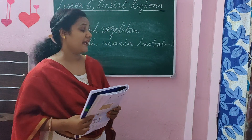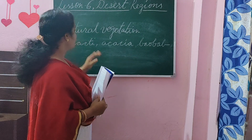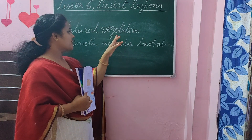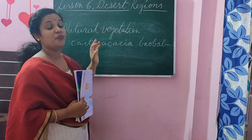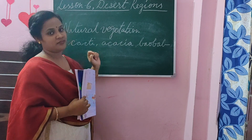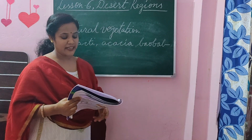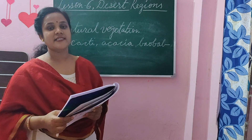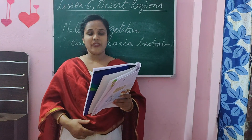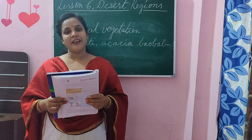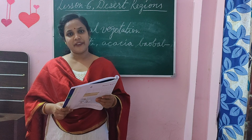Now today we will learn something about natural vegetation. Natural vegetation means forest and plant life. Very few plants grow in hot deserts because the rainfall is very less here.